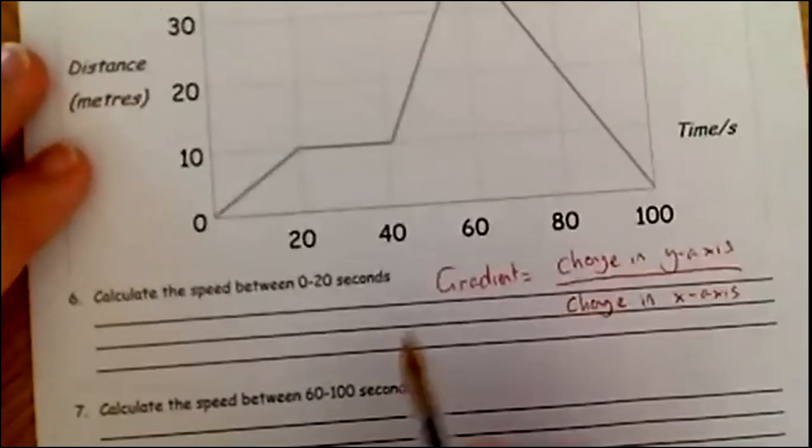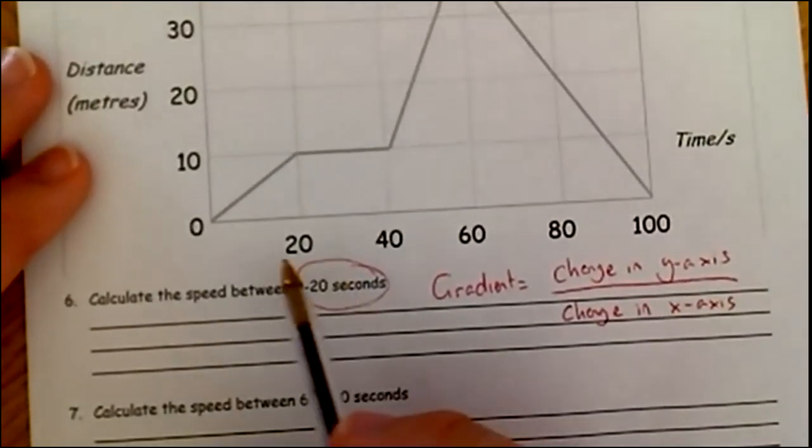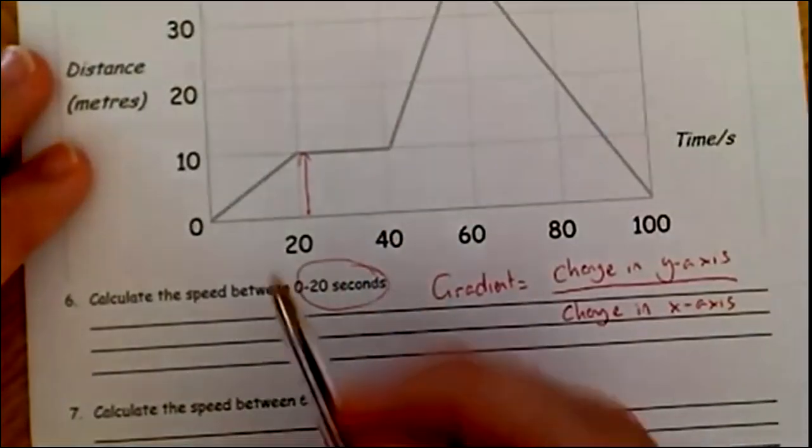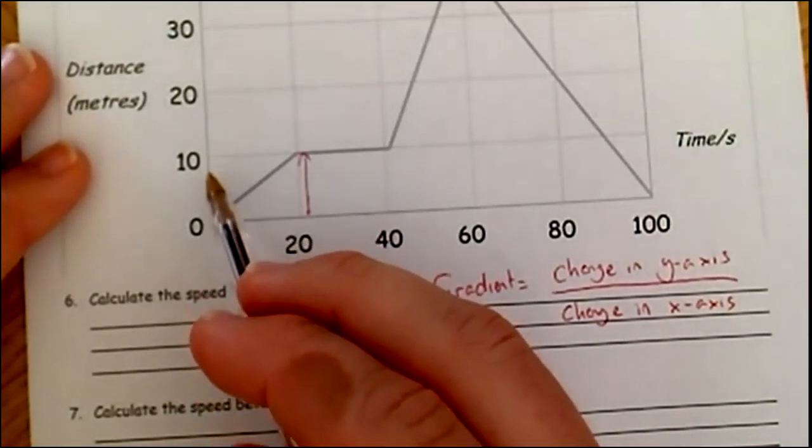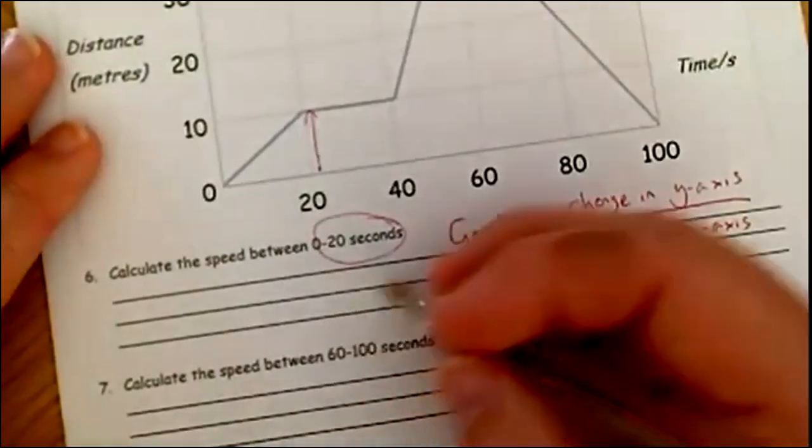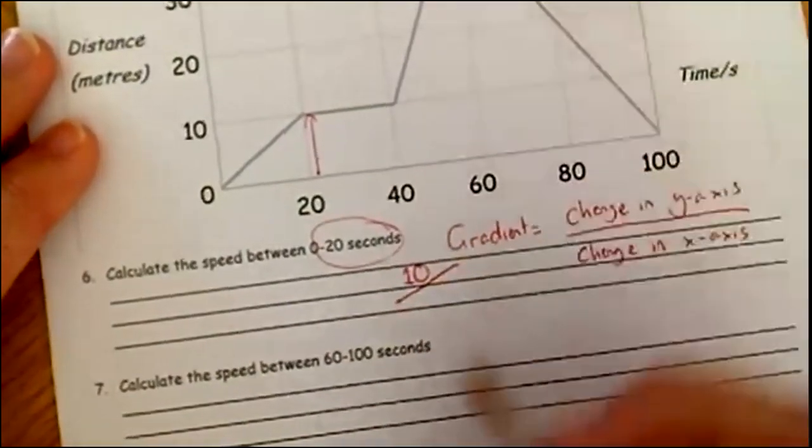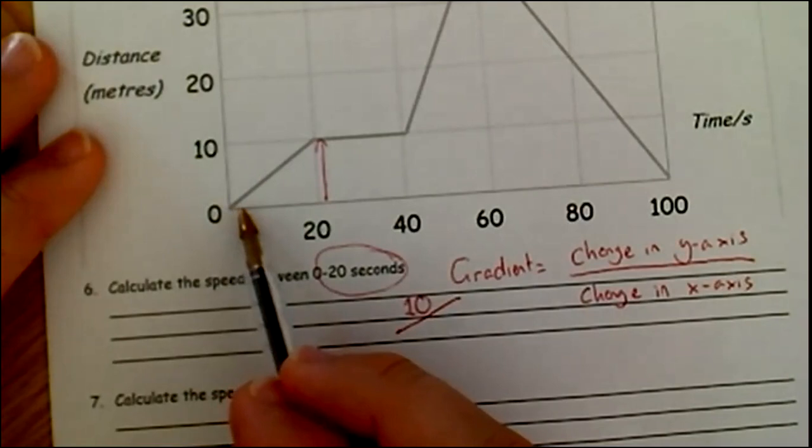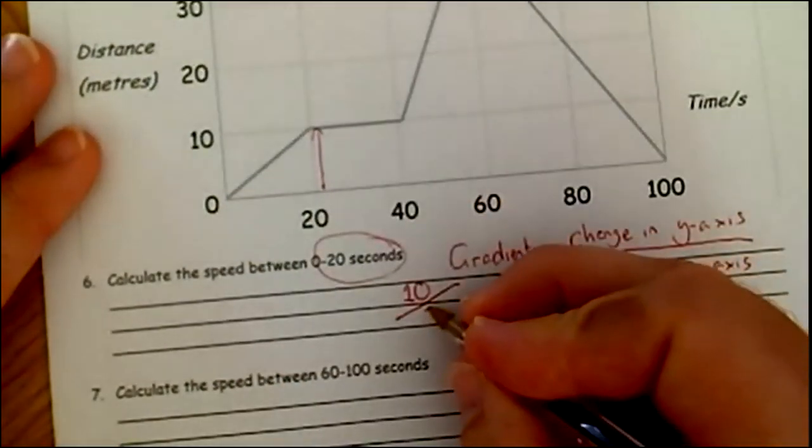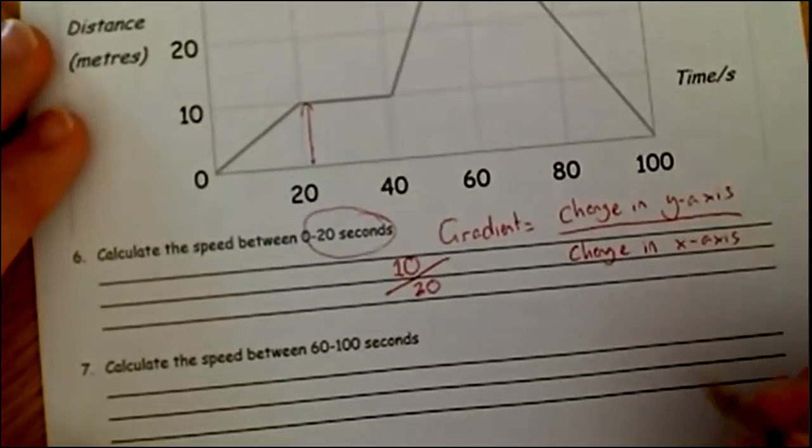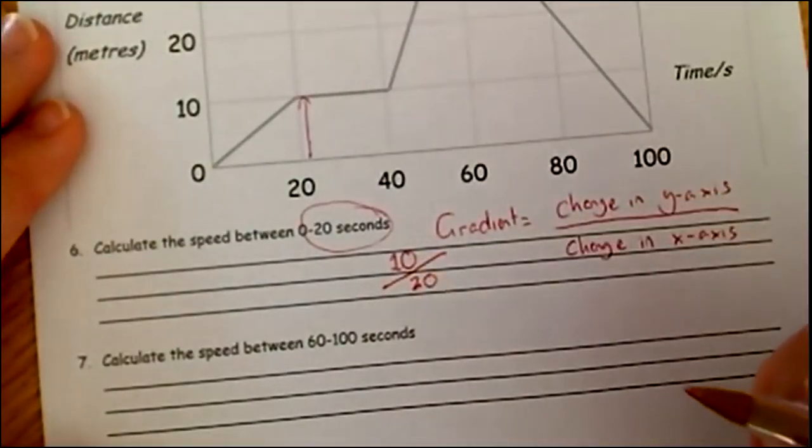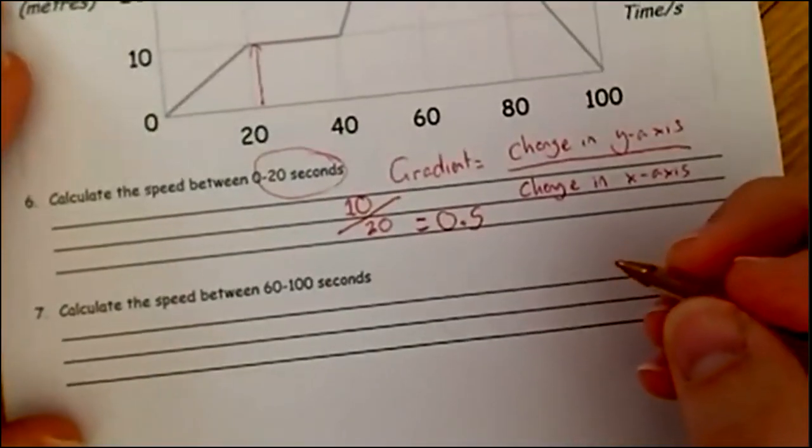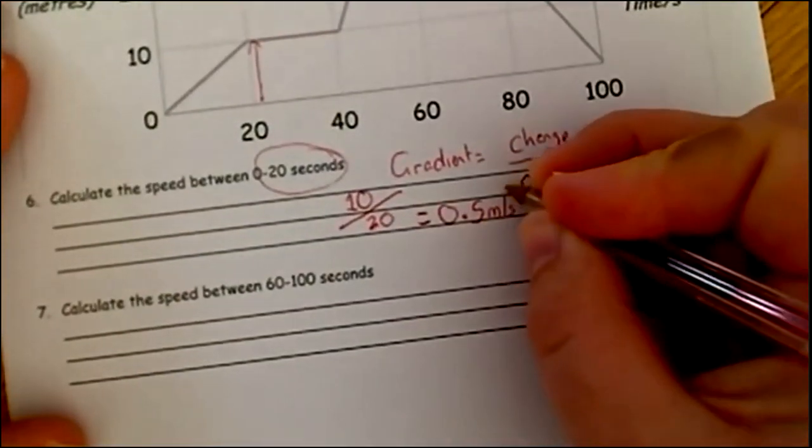Let's do this together. Between zero and 20 seconds, they've gone from zero up to 10. The change in y is from here to 10, so it's 10. We know the top of this will be 10. The change in x-axis, this is the bottom, so it starts at zero and it goes to 20. The change is from zero to 20, so that will be 20. That means that the gradient is 10 divided by 20. The speed, or the gradient, will be 0.5. And because we know it's speed, it's meters per seconds.